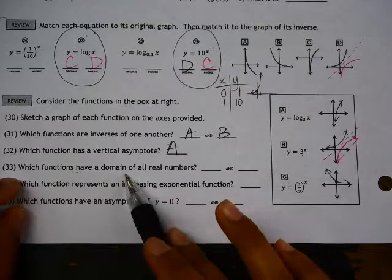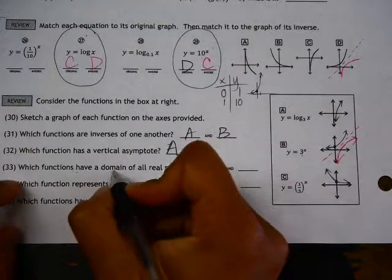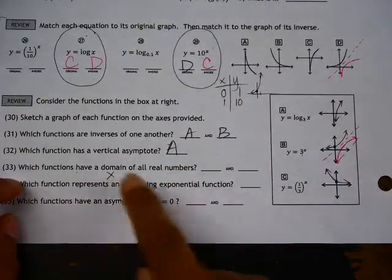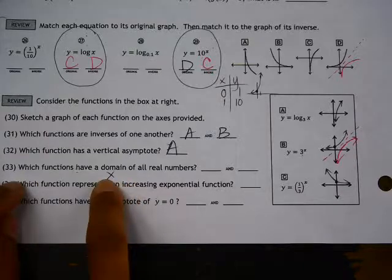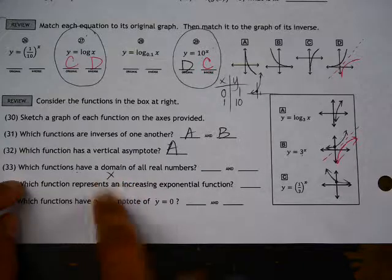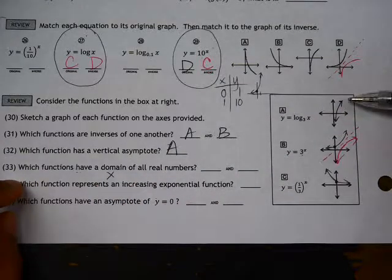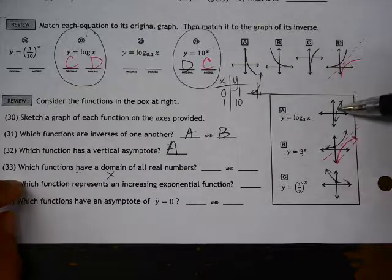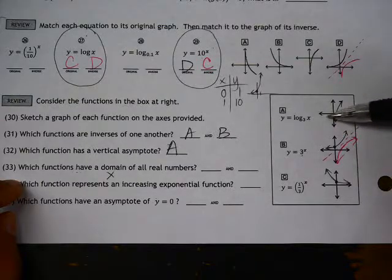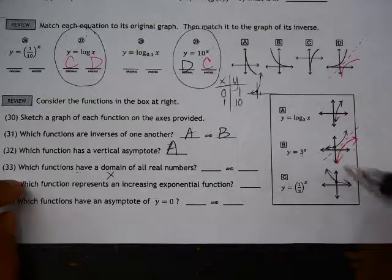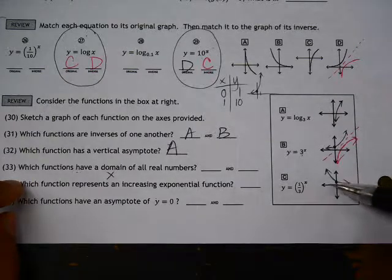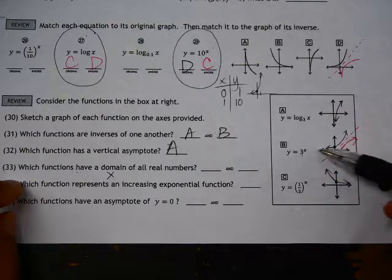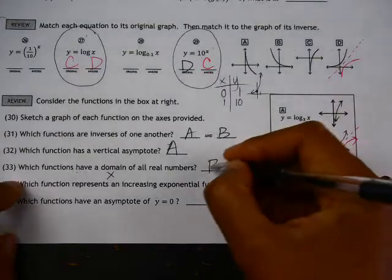And, which functions have a domain of all real numbers? Remember, domain refers to x values, and we're looking at which graphs exist for all values of x. If you look at graph a, this graph only exists for positive values of x, nothing negative. But, graphs b and c exist for all real numbers in the x direction. So, that would be b and c.